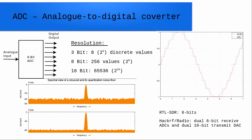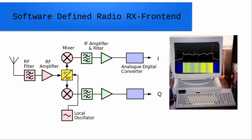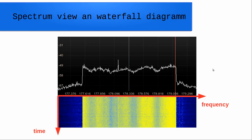On the right side we get our signal in the time domain, on the left side the frequency domain. How do we get the frequency view of our signal? Here in the form of a spectral view, and the part with the nice colors at the bottom is called a waterfall diagram. In the spectrum view we see the level of our signal components over frequency, and the waterfall diagram shows different levels in different colors plotted over time.